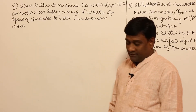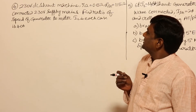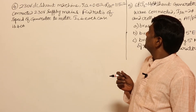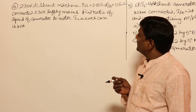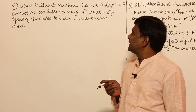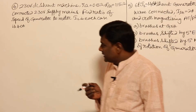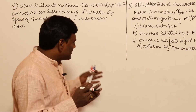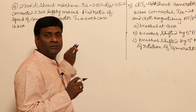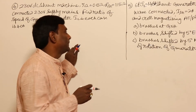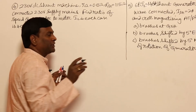In this section let us see some more problems of DC machines. It is a DC shunt machine with armature resistance and shunt field resistance given, connected to a 230 volt supply. We need to find the ratio of speed of generator to motor. The line current IL in each case is 40 amperes. This is almost the same as a problem given in the GATE exam.